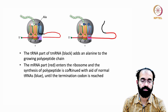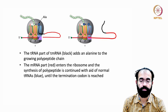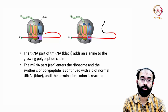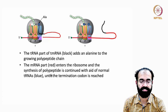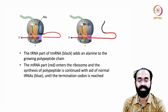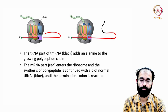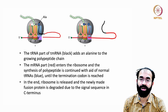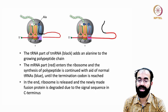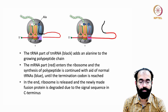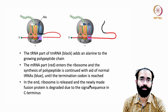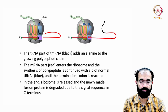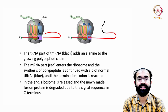The tRNA part of tmRNA, shown in black, adds an alanine to the growing polypeptide chain. The mRNA part, shown in red, enters the ribosome and synthesis continues with the help of normal tRNAs — just as in regular translation — until the termination codon present in the tmRNA's mRNA part is reached. At that point, the ribosome is released because eRF1 and eRF3 can now recognize the stop codon.